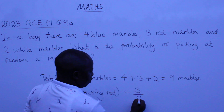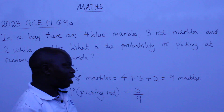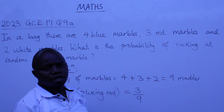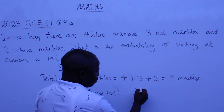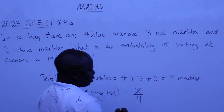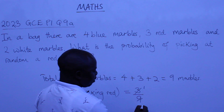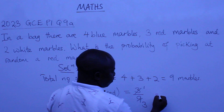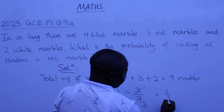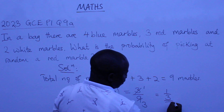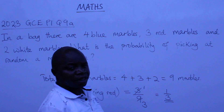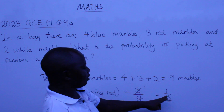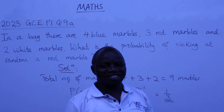Now, you can reduce this fraction. How many threes are in three? One. And three goes into nine three times. So we are going to say the probability will be one over three. This is the correct answer. The probability of picking a red marble is one over three.